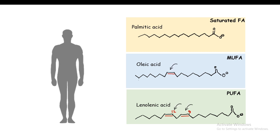These classifications are based on whether they have unsaturation in their moiety or not — simply the presence of double bonds. Palmitic acid is an example of a saturated fatty acid with no double bonds. Oleic acid is a MUFA with one double bond at the ninth position. Linoleic acid is a PUFA with double bonds at the ninth and twelfth positions.